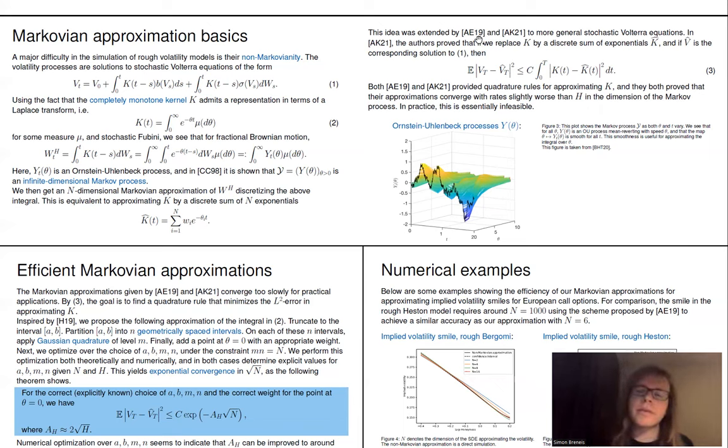Now, this idea was extended more recently by Abi Jaber, Larsson, and Pulido to more general stochastic Volterra equations. So Volterra equations of this type here. And for example, Alòs, Euch, and Bayer proved that if we replace our kernel K by such a discrete sum of exponentials K hat, and if we consider the solutions V to this differential equation, and also the solution V hat where we use K hat instead of K, then the L^2 error at the final point can be bounded by the L^2 error in the approximation of K hat with K. So this theorem simply reduces the approximation of V to the approximation of K, of course a much simpler task.